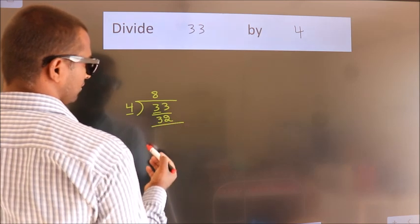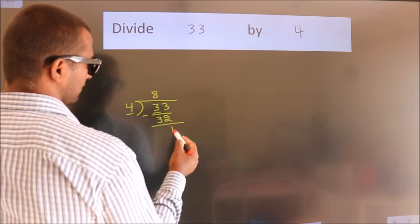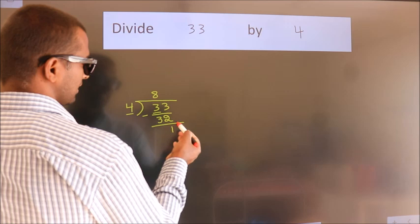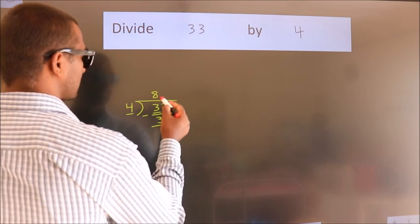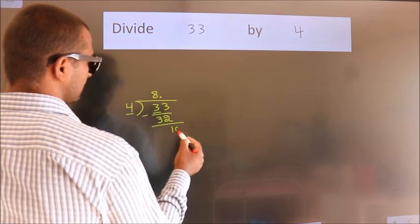Now we should subtract. We get 1. After this, no more numbers to bring down, so what we do is we put a dot and take 0.